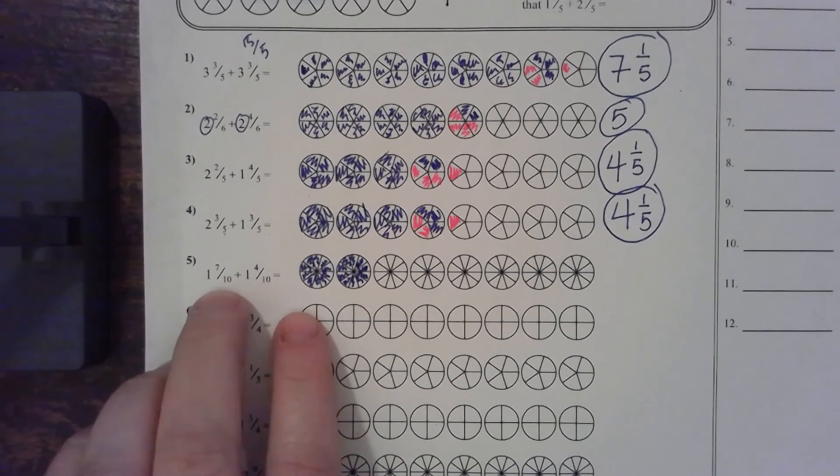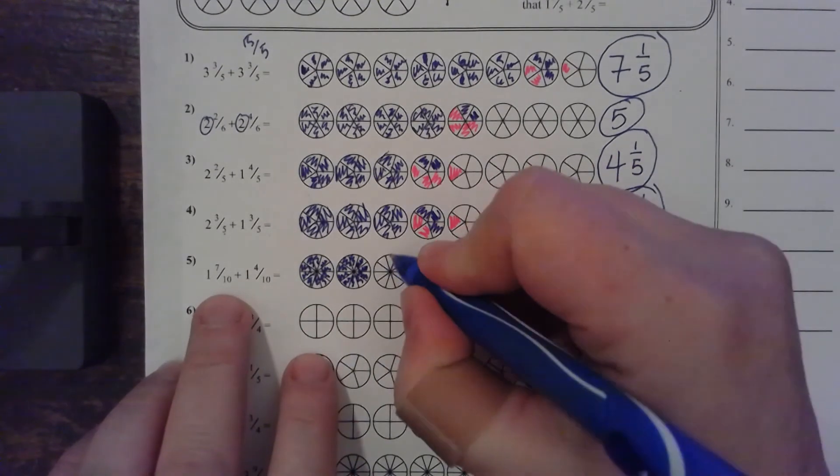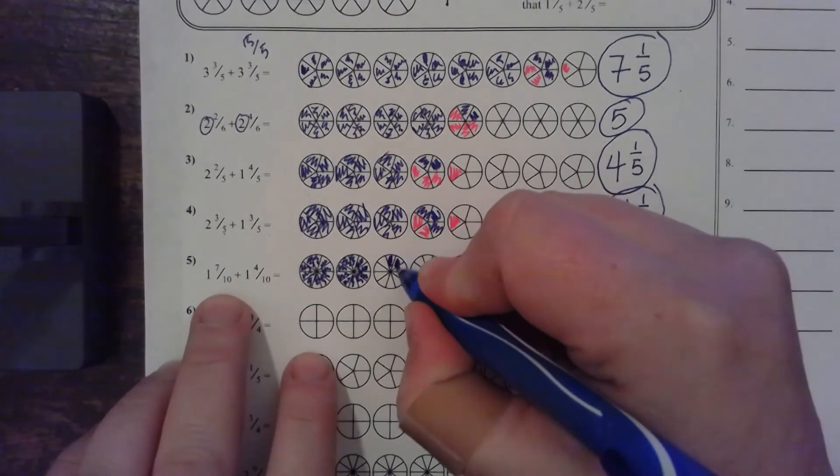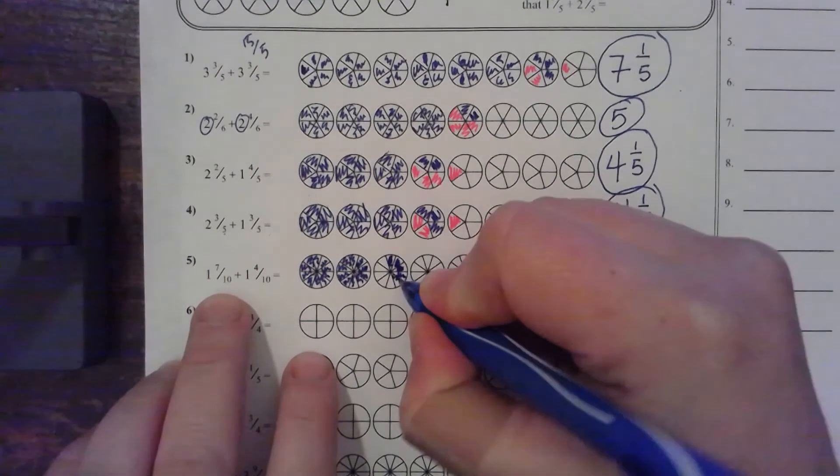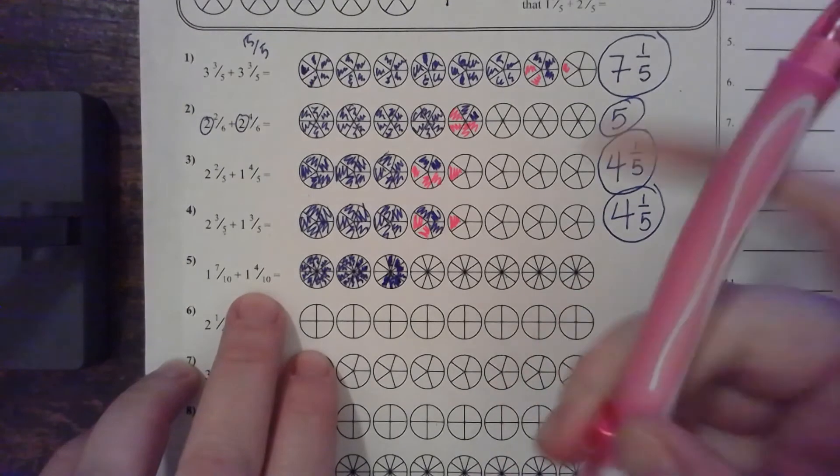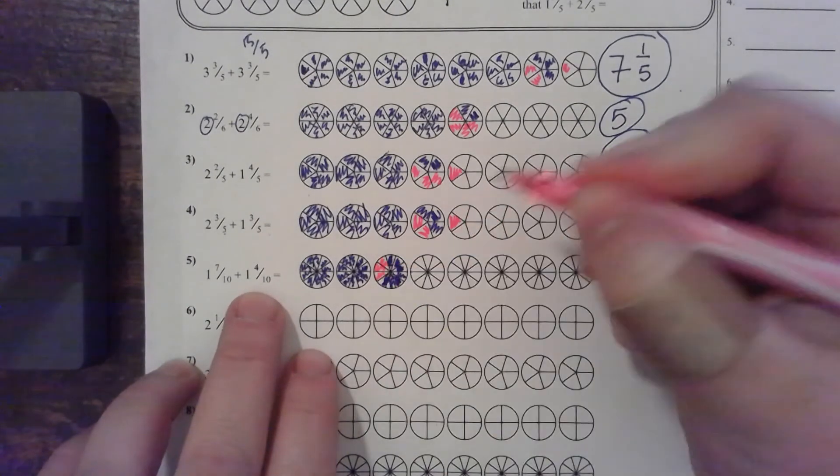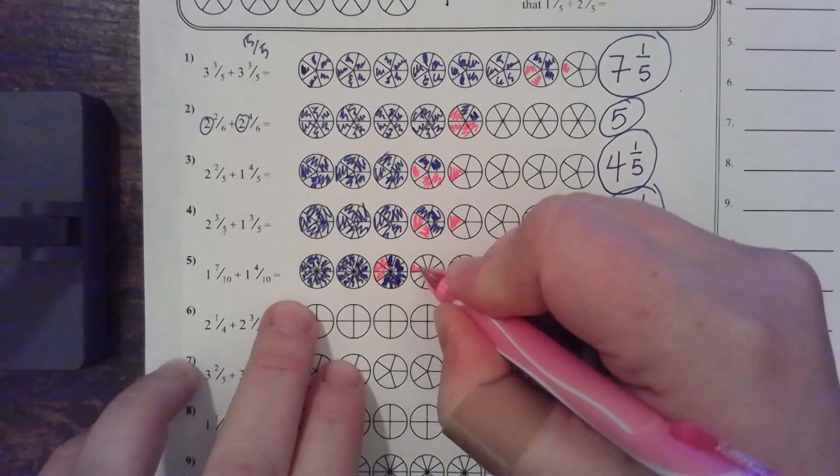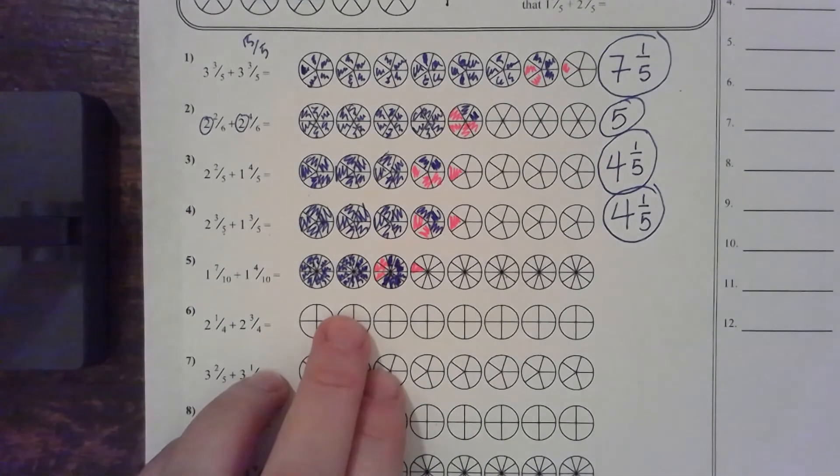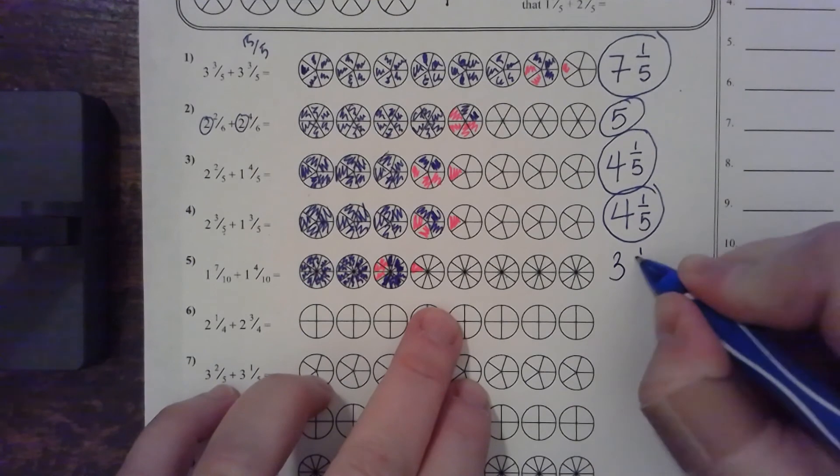Now, I have seven-tenths plus four-tenths. So, I'm going to go ahead and color in seven. One, two, three, four, five, six, seven, plus four-tenths. One, two, three, four. Okay. So, my answer is one, two, three, and one-tenth.